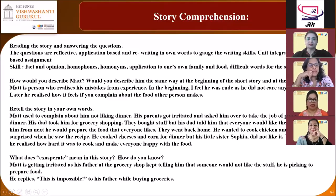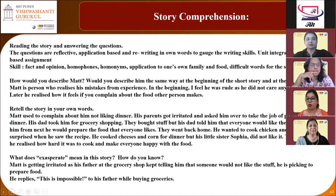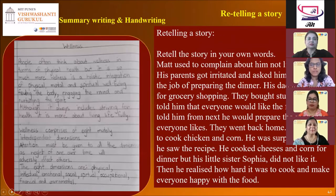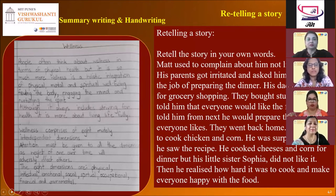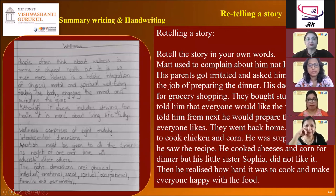Let's take a look at the next slide. Story comprehension — here the student reads the story and answers the given questions. The questions are reflective, application-based, and involve rewriting in own words. Going further, let's take a look at summary writing and handwriting. Here, a passage was dictated and students had to write it neatly in their notebooks. Skills developed are listening, handwriting, and spellings. Retelling a story — a retelling is remembered events from a story heard orally. Here the student retells his story in his own words.